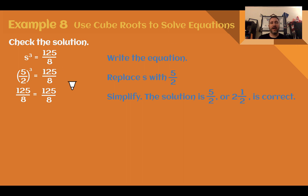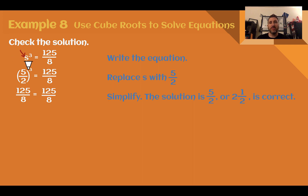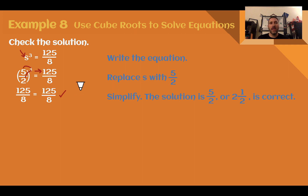Let's check our solution. We got 5 over 2 as our side. Plugging back in, using properties of exponents we distribute the exponent to both the numerator and denominator: 5 to the 3rd power equals 125, and 2 to the 3rd power equals 8, giving us 125 over 8 — which is what we started with. That verifies we did it correctly.